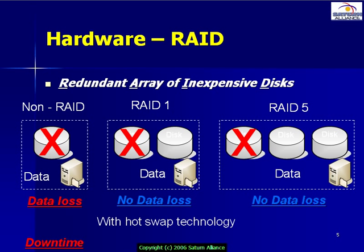That means the power is still connected and the server is still running hot. On a non-RAID system, hotswap makes no difference because after a single disk failure, you still have to replace the disk and do a restore — so hotswap on a server with a single disk doesn't make much sense. However, on the RAID 1 and RAID 5 systems on the right, if I have hotswap technology, when a disk fails I can just pull it out and replace it on the fly, even while the server is operational — so there's no downtime and no need to reboot.